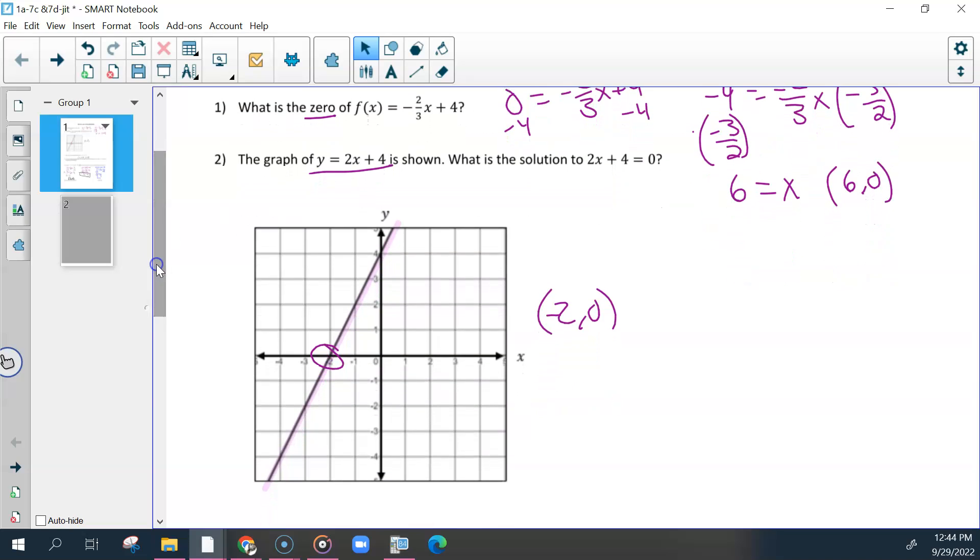Number 2. Solution is another word for x-intercept. So again, you were only looking for your x-intercept, which was at negative 2, 0. If you wrote down your y-intercept there, you can erase that part because you didn't need it for that one.